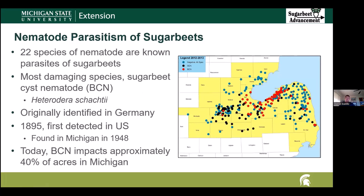Thinking of nematodes parasitizing sugar beets specifically, there are actually 22 different species of nematode that are known to parasitize sugar beets. The most damaging of these species is, in fact, the sugar beet cyst nematode, or Heterodera schachtii. This one nematode is actually responsible for about 90% of the damage caused by nematodes to sugar beets. This parasite was originally identified in Germany, and it was found here in the United States back in 1895, then eventually found in Michigan in 1948.